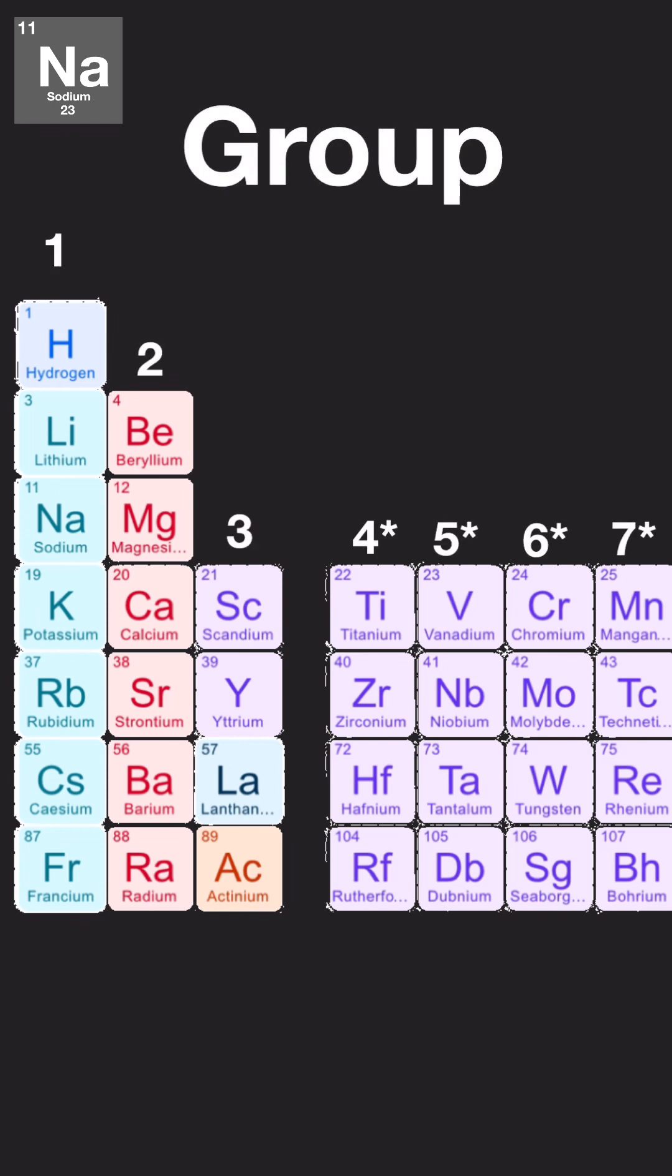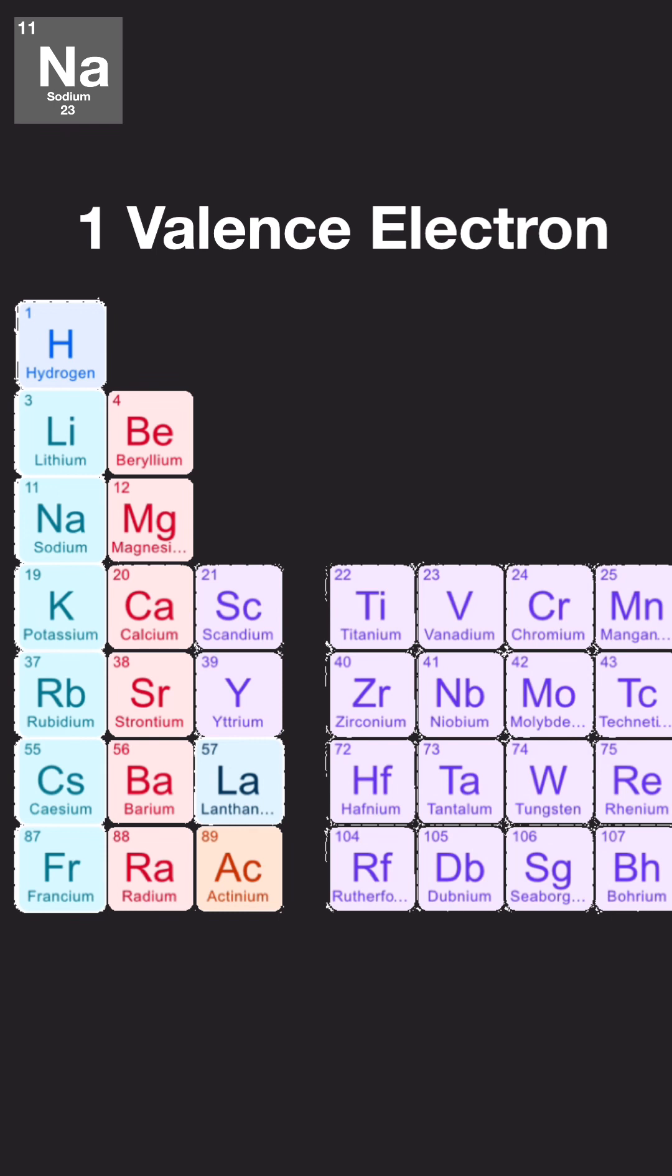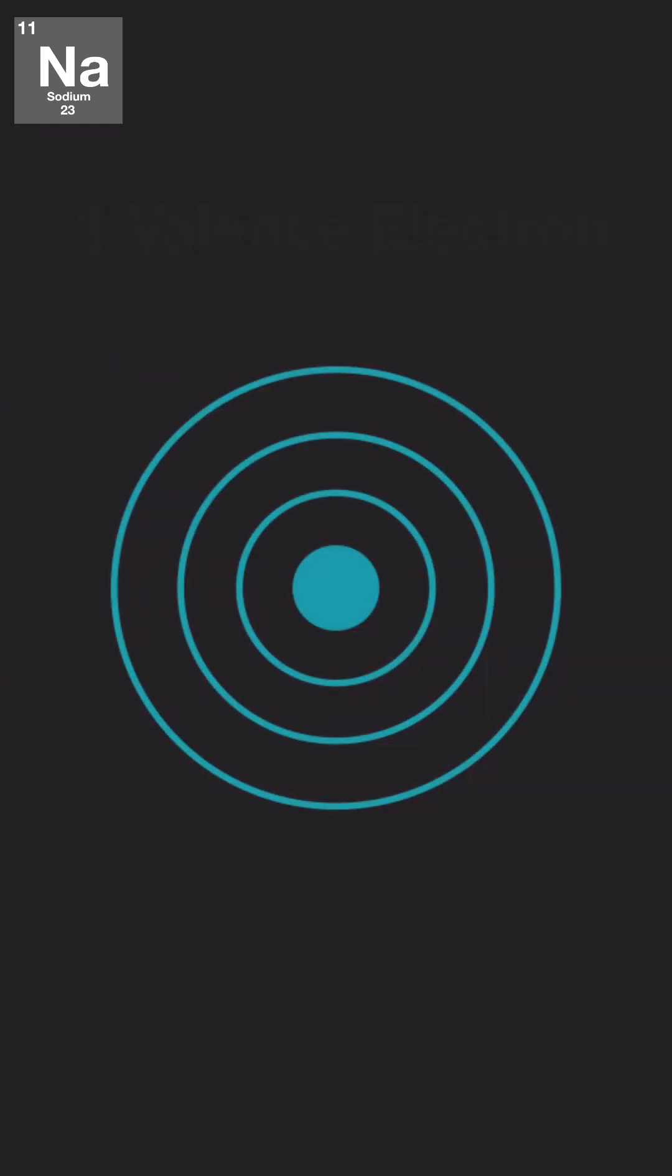After this, we take the group or column number. In our case, it's one. This is the number of electrons in the outer shell. These are called valence electrons. Let's put them in the outer shell.